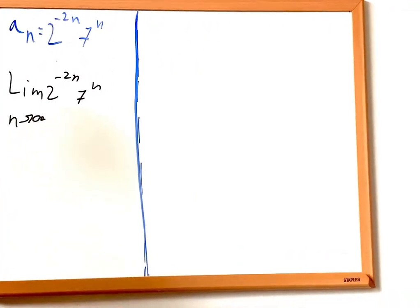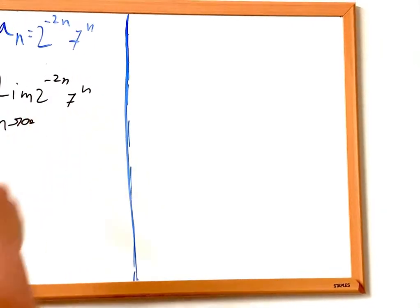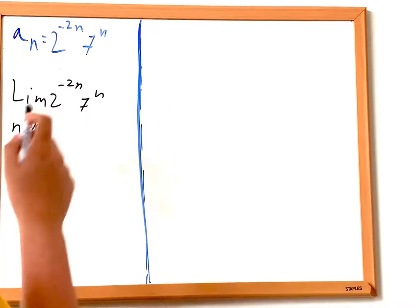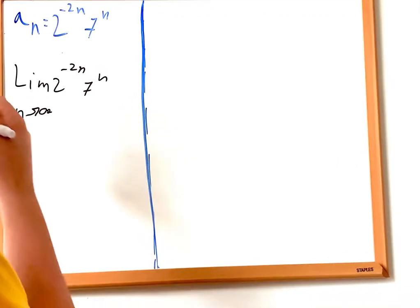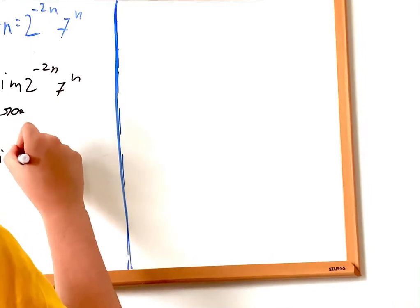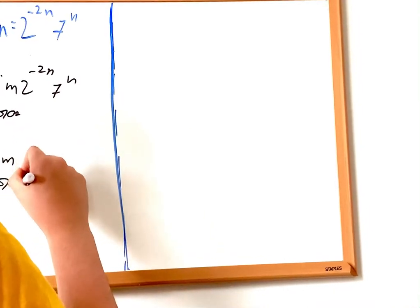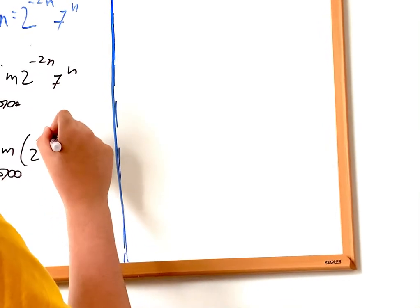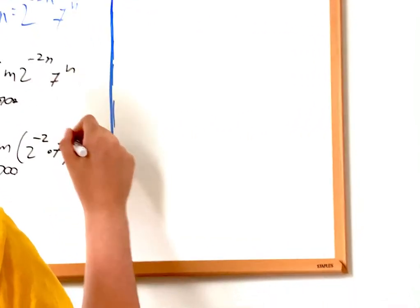Now, this seems a little bit hard, but we can see that n is factorable and we can factor n in both of the expressions. So if we factor n, we can see that this expression became the limit as n approaches infinity. If we factor n, we get 2 to the power of negative 2 multiplied by 7, all to the power of n.